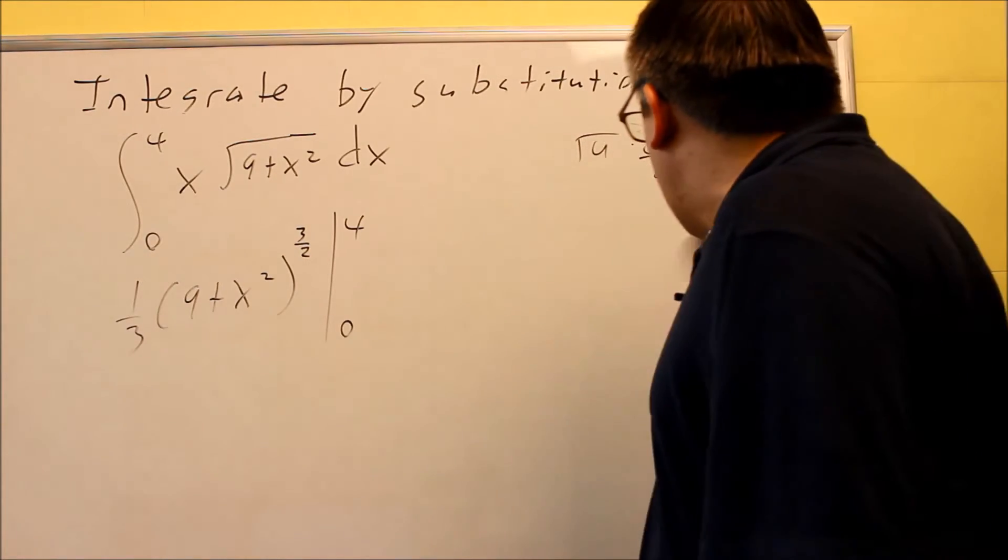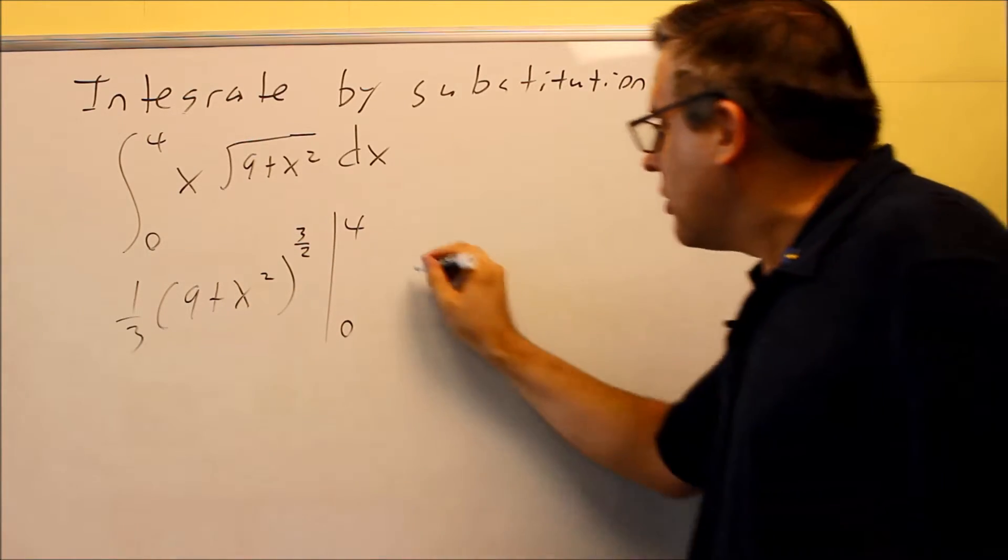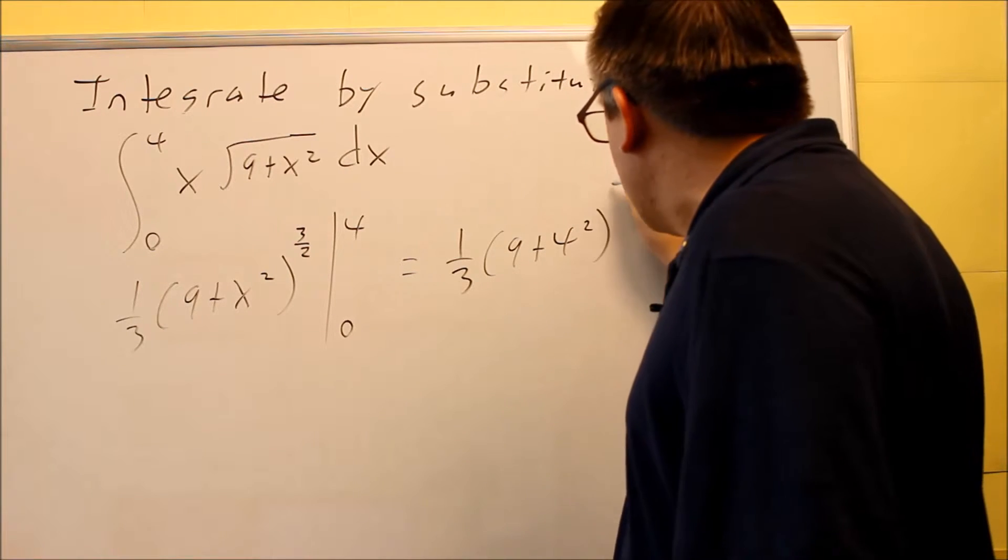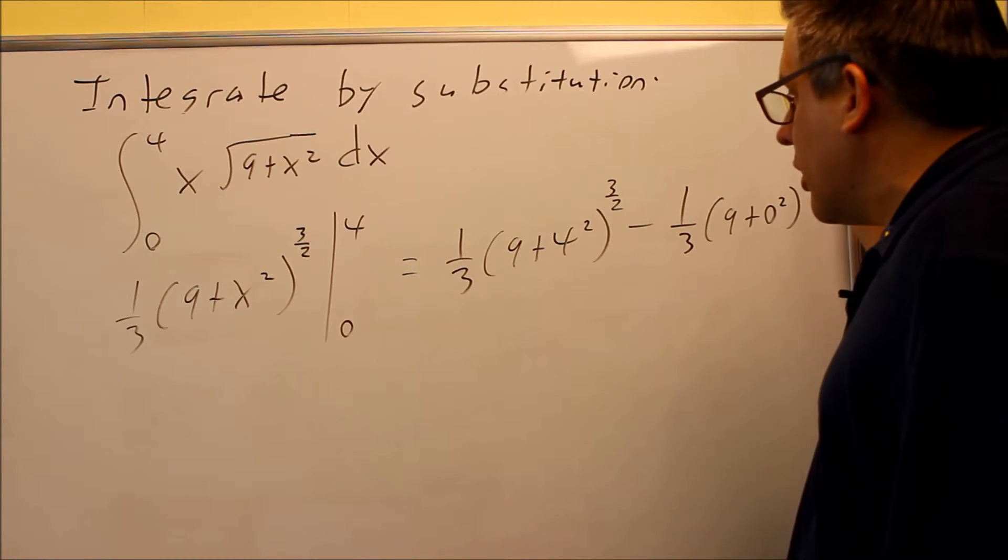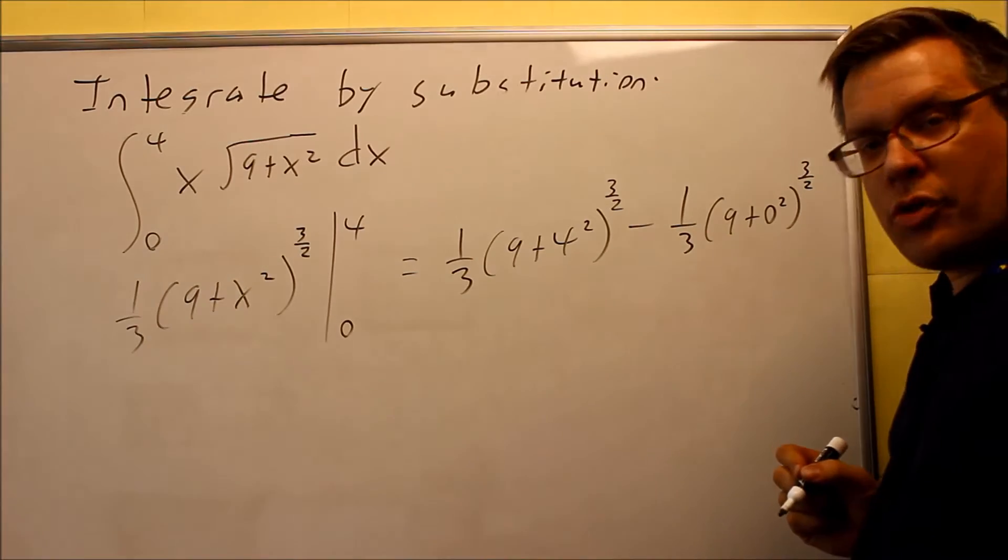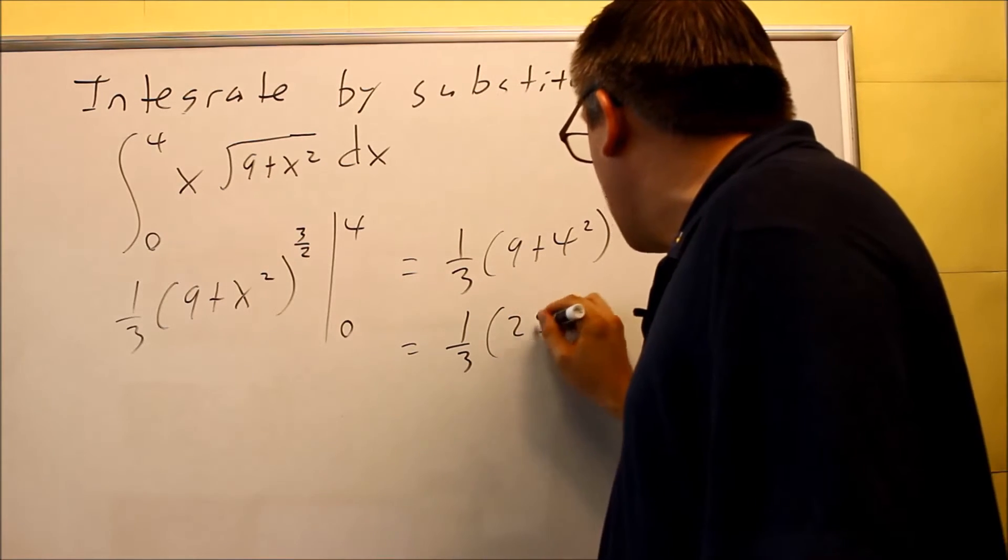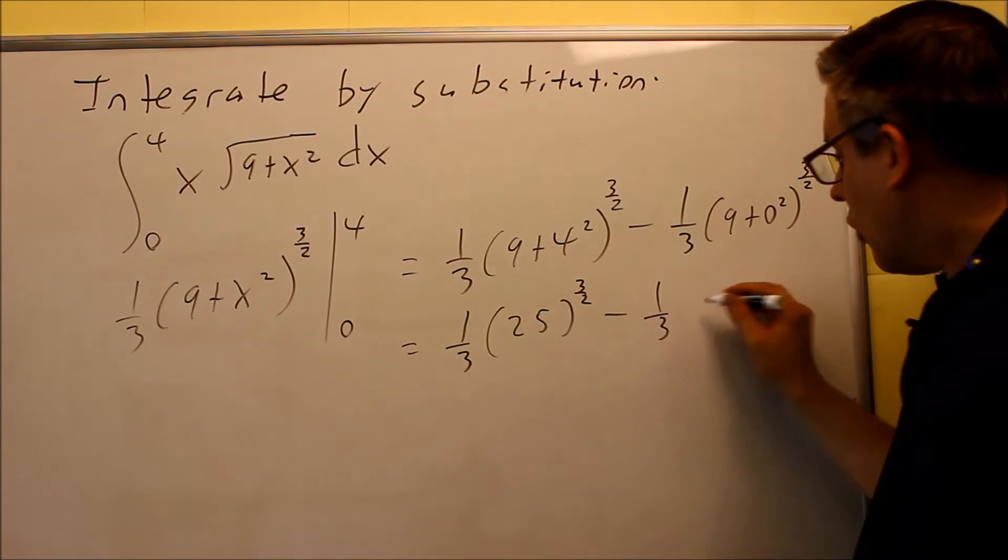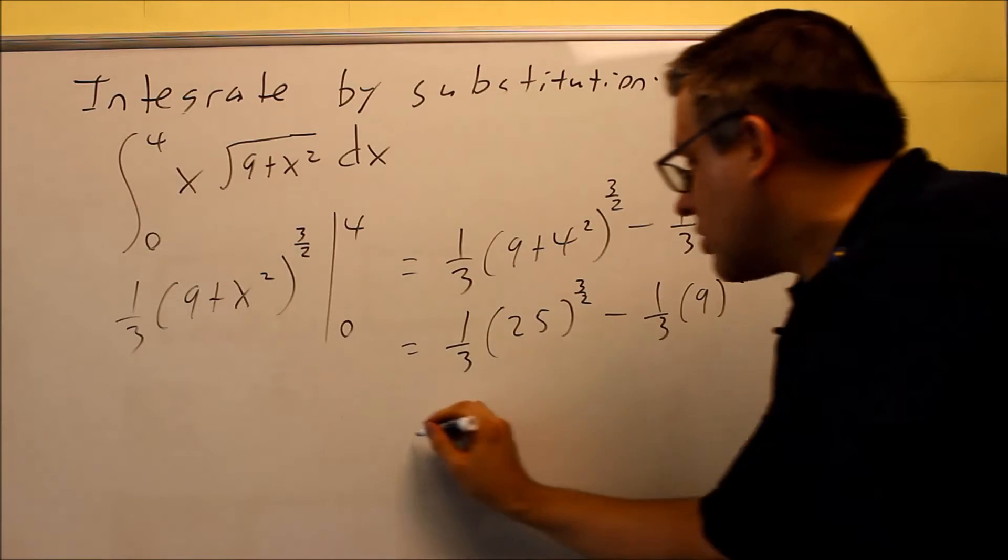So I'll do this process here, we've plugged it back in, now I'll put the four in and I'll put the zero in to get the answer. So one-third, 9 plus 4 squared to three-halves minus one-third, 9 plus 0 squared to the three-halves. So we've got one-third goes in front of both of those. I'm going to simplify each of these, so I have a one-third on the inside, I'm going to get a 25, that's raised to the three-halves. Inside this one, I'll get a 9 left over, so I have 9 to the three-halves.